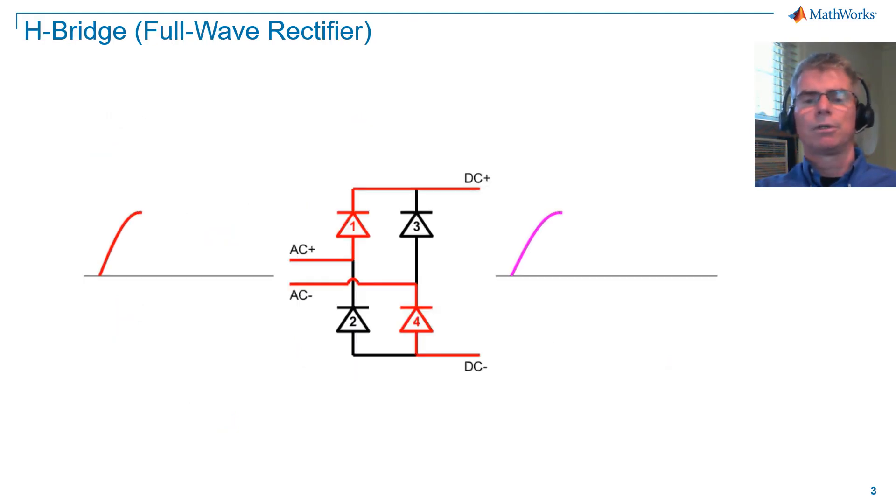To rectify both the positive voltage and negative voltage on an AC waveform, we can configure an architecture known as an H-bridge. The aim of an H-bridge is to allow a path for the negative half cycle of the AC waveform by connecting the negative AC terminal to the positive DC terminal, and the positive AC terminal to the negative DC terminal. This means the negative half cycle will show up as a positive half cycle on the DC side.